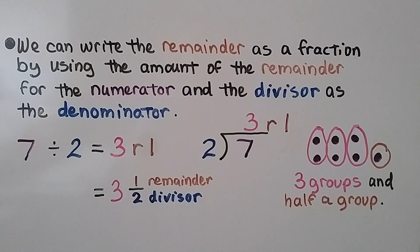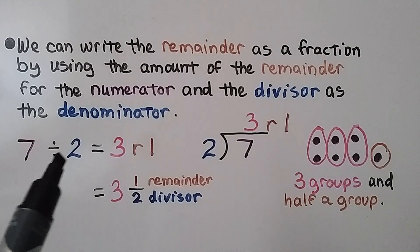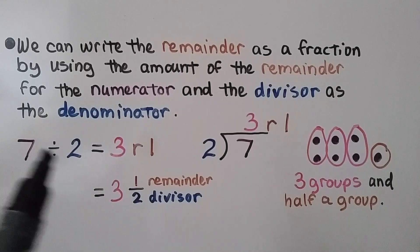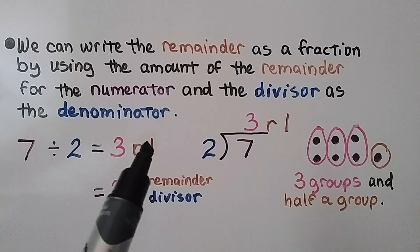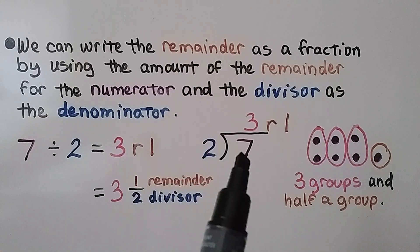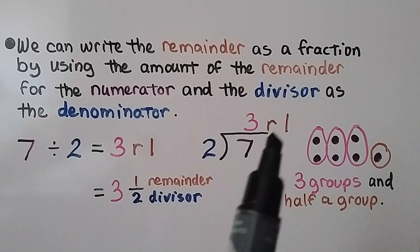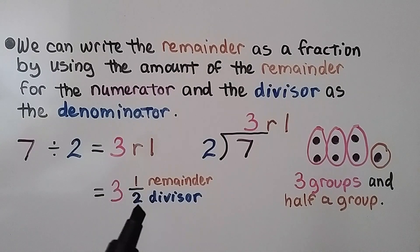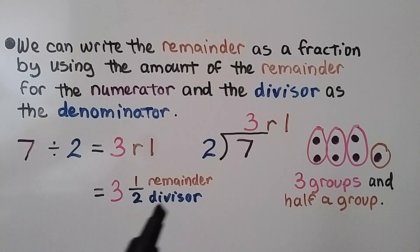We can write the remainder as a fraction by using the amount of the remainder for the numerator and the divisor as the denominator. So here we have a very easy division problem so you'll understand what's happening. We have 7 divided by 2. Well, we know 2 times 3 is 6, so there are 3 twos in a 7, but there's 1 left over. We have 1 remaining. We can also write it like this: 7 divided by 2. This means 2 fits into 7 how many times? It fits in 3 times with 1 left over. Our remainder, 1, becomes our numerator and the divisor, 2, becomes our denominator. We have 3 and a half groups.